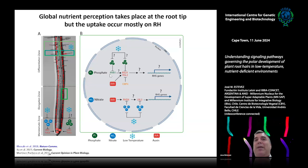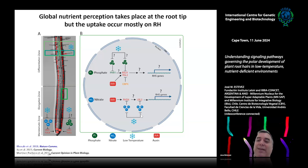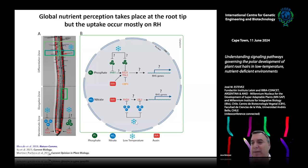At the molecular level, we understand quite well how nitrate and phosphate are sensed and how they trigger root hair specific gene expression. But a few years ago we started looking at what happens with low temperature and the relationship between nutrients and low temperature effects. That is what I am going to talk about today.